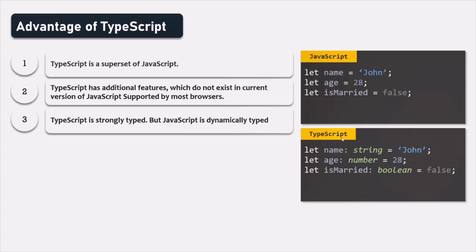You also need to remember that in TypeScript, specifying the variable type is optional — it is not mandatory. For example, we can explicitly specify the data type for a name variable as string, but this is optional. If you don't specify the data type, just like JavaScript, you can store any type of value in that variable. But if we explicitly specify the data type for a variable, this feature makes our application more predictable, and it also makes it easier to debug when something goes wrong.